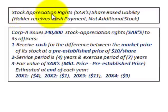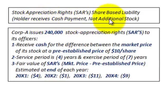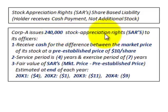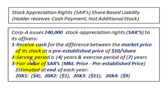We're going over Stock Appreciation Rights, or SARs — a share-based liability where the holder receives a cash payment but no additional stock. For example, Corporation A issues 240,000 SARs to its officers, who receive cash for the difference between the market price of its stock and a pre-established price of $10 per share. The service period is four years and the exercise period is seven years.